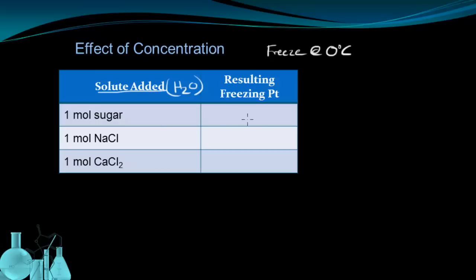So let's see what happens to the freezing point when I add 1 mole of sugar compared to 1 mole of sodium chloride compared to 1 mole of calcium chloride. And we can start to see the effect of concentration on this particular colligative property, this freezing point depression that we're looking at. So, normally it's 0 degrees Celsius. If we put 1 mole of sugar and we dissolve that into the water, we're going to get a new freezing point of negative 1.86 degrees Celsius.